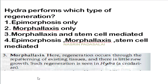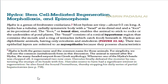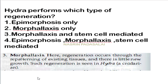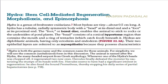Hydra performs which type of regeneration? In developmental biology 9th edition, morphallaxis is mentioned. However, recent editions (11th and 12th) state Hydra has the capacity to undergo all three kinds of regeneration. It has stem cells enabling stem-cell-mediated regeneration, morphallaxis, and epimorphosis — the latter occurring when the cut is made in the middle. The correct answer is option number 4.